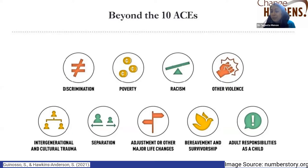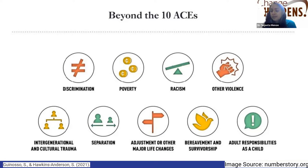Bereavement is another expanded ACE — many have lost people, and in the last two years we lost about 25% of our population through COVID. Some young people lost their immediate caregivers and parents. That is a huge adversity. Finally, adult responsibilities: many young people have responsibilities of taking care of siblings, going to work to pay the bills — all of these adult responsibilities already as a young person, which can be very scary for them.